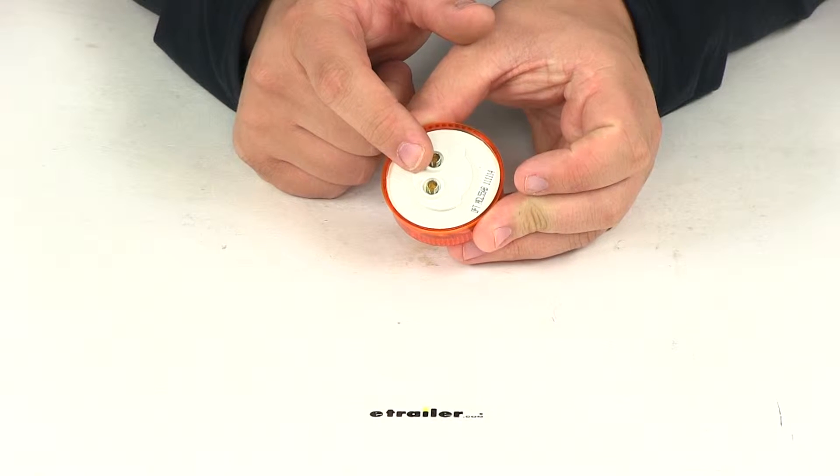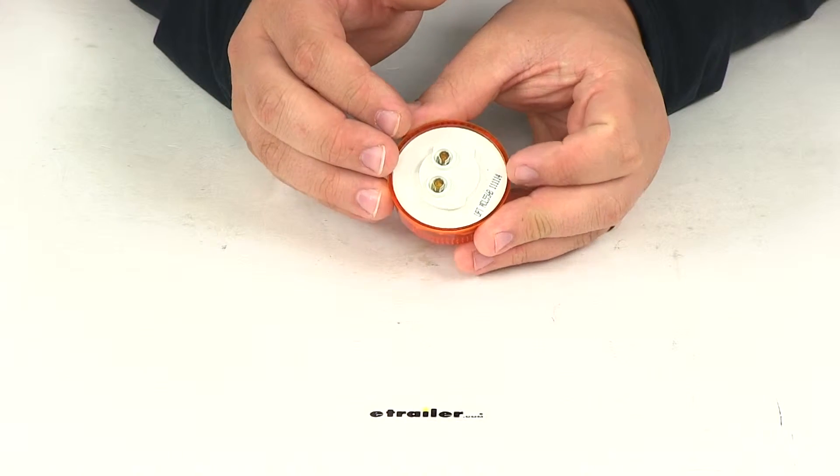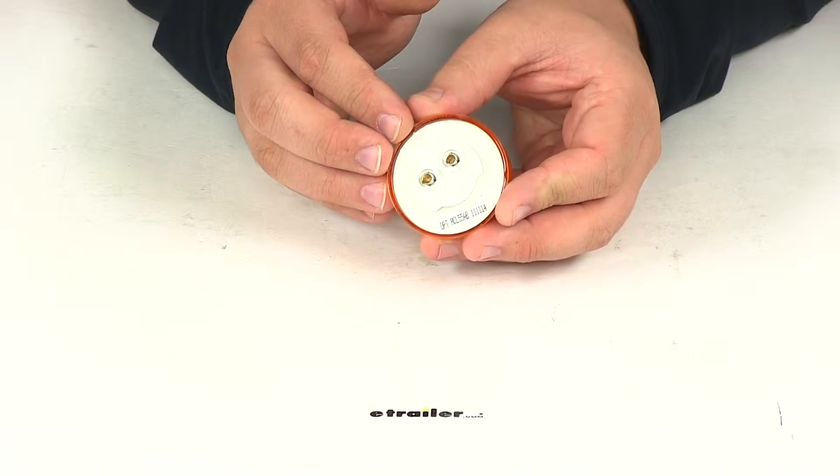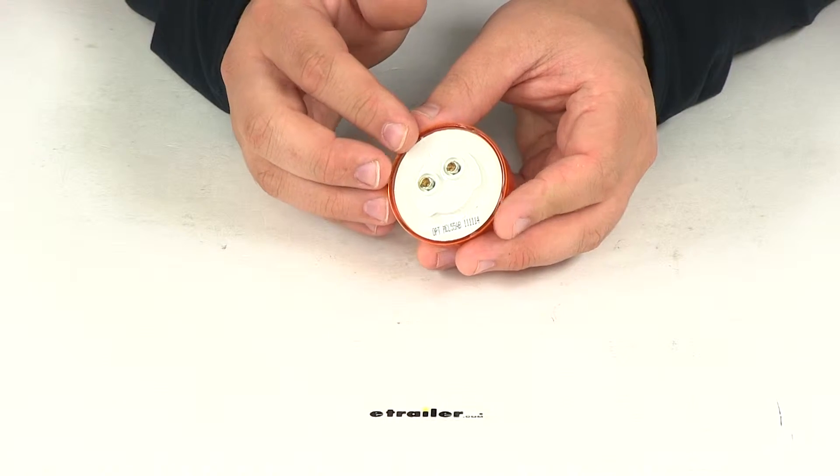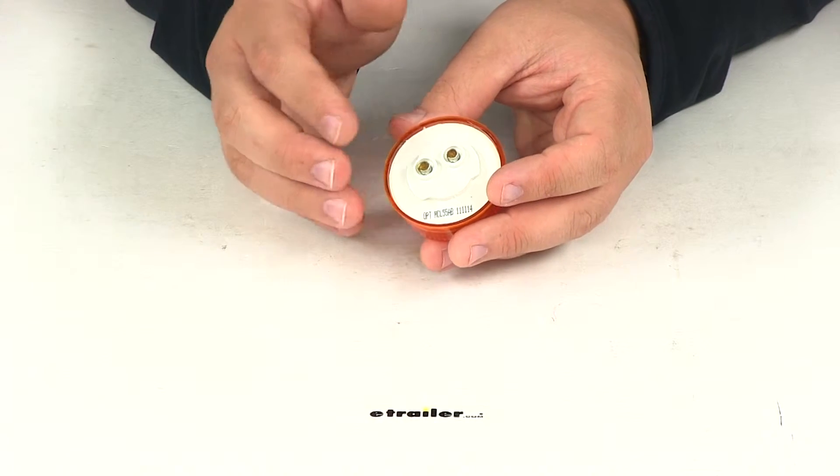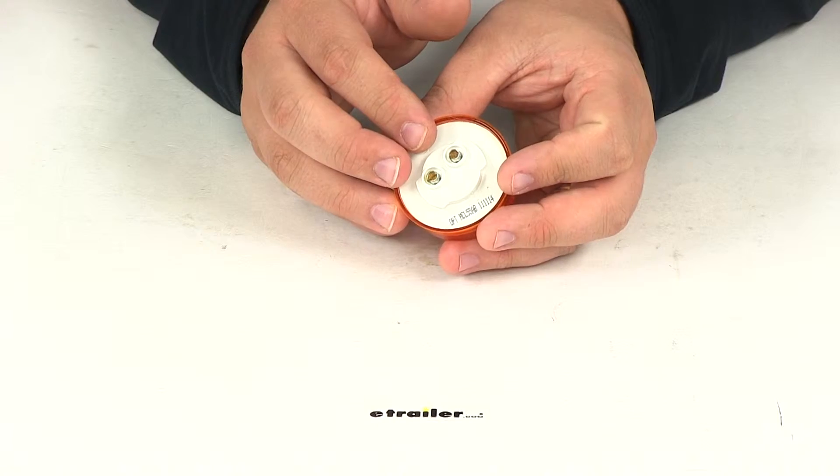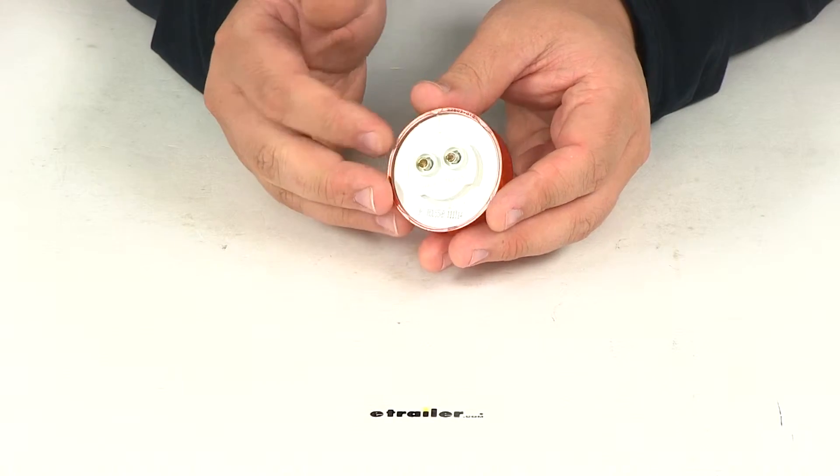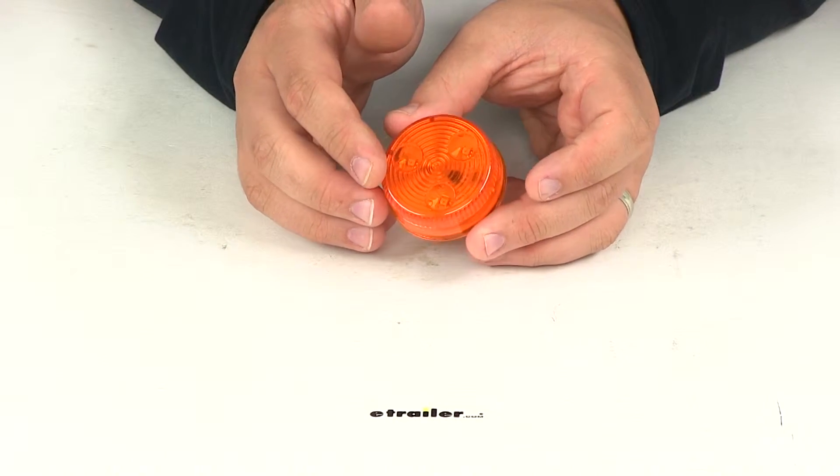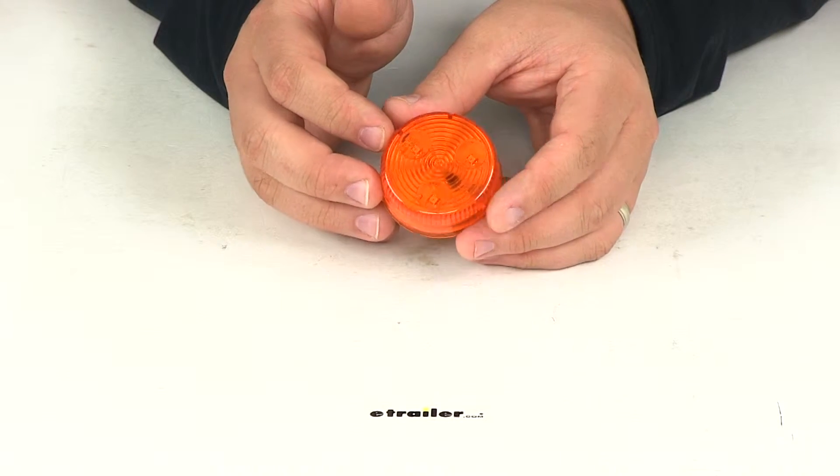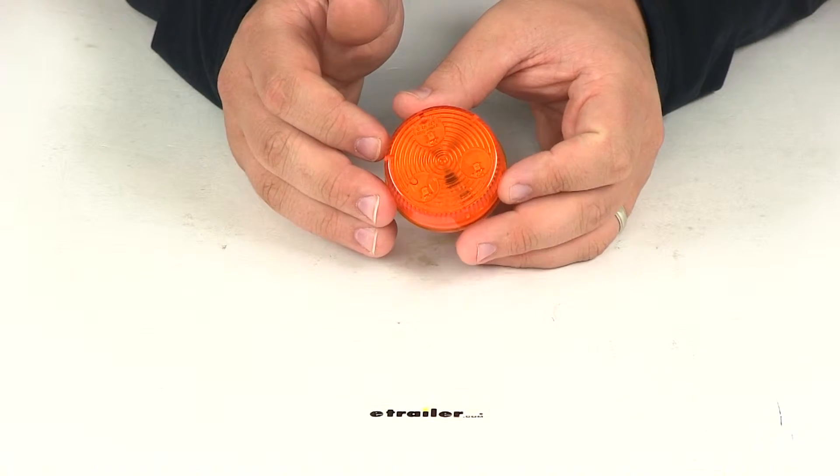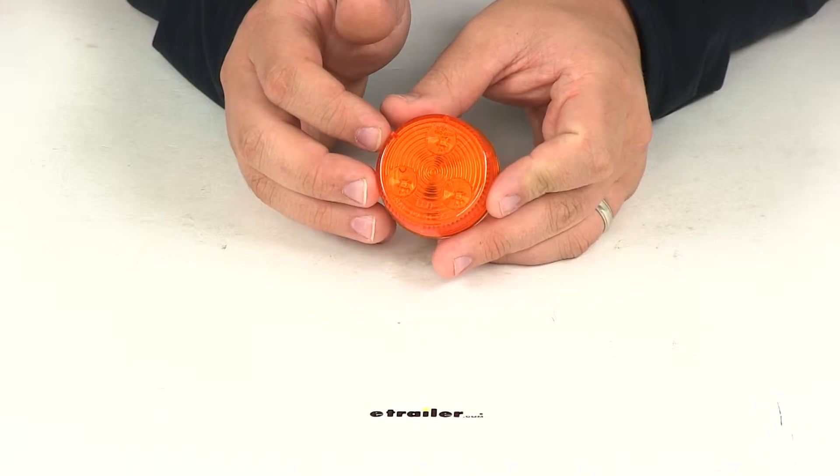See here on the back side it's got a two-prong connection. This is designed to accept your industry standard two-prong plug making it very simple to upgrade from an incandescent light design or incandescent light system. In order to get this mounted it does require a mounting grommet or a mounting bracket as well as the plug for a complete installation. Those items are sold separately and they can be found and picked up here on our website.